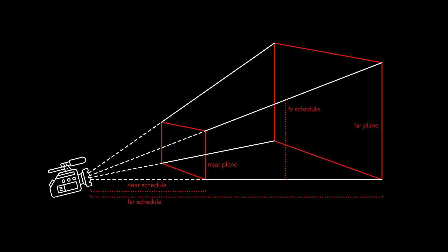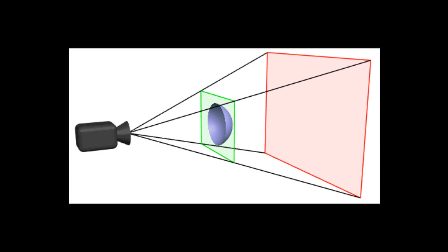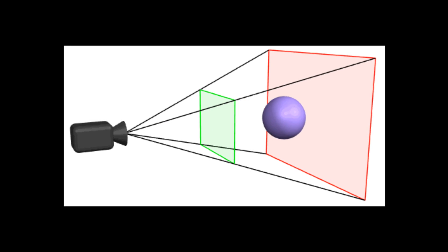The near and far parameters let us define the distance of both planes to the camera. The FE parameter lets us set the angle of the focal view, and thereby the size of both planes. With all these parameters combined, we can define our animation's viewing, rendering, and focus area.